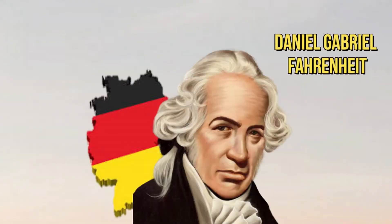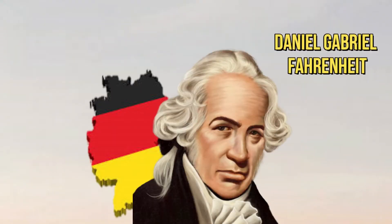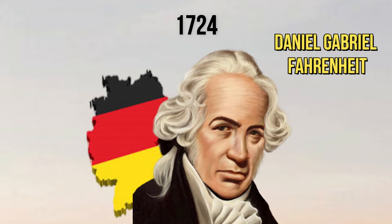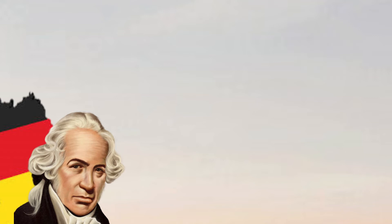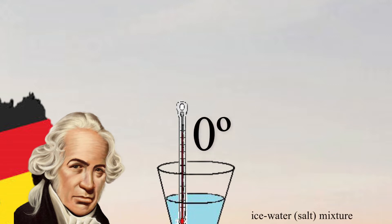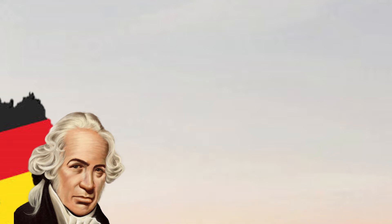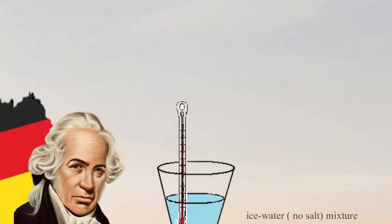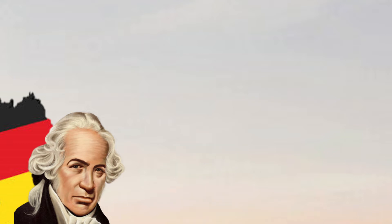Daniel Gabriel Fahrenheit was a German physicist who developed the Fahrenheit temperature scale in 1724. Fahrenheit originally established a scale in which the temperature of an ice-water-salt mixture was set at 0 degrees, the temperature of an ice-water-no-salt mixture was set at 30 degrees, and the temperature of the human body was set at 96 degrees.